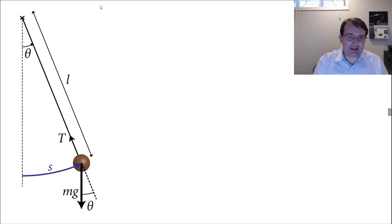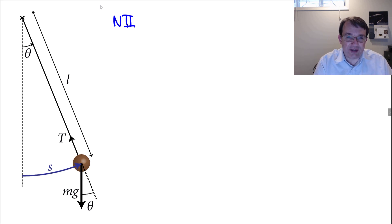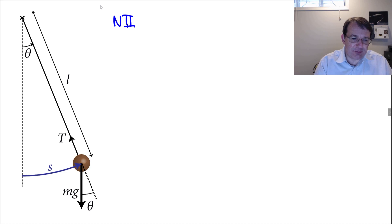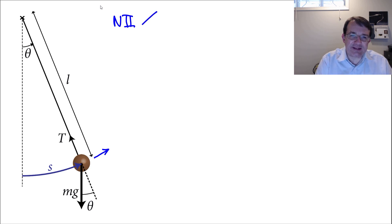We've seen the simple pendulum in action; now we'll determine whether it's a simple harmonic oscillator. We do exactly what we did with the simple mass-spring system: look at the forces acting on the mass and apply Newton's second law. The decision we have to make is in what direction to apply it. Unlike a mass on a spring which moves in a line, the mass here moves in a circular arc. We want to eliminate the tension force, so we apply Newton's second law in the tangential direction — parallel to the tangent of the circle.